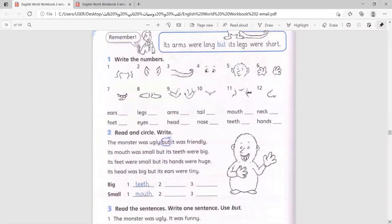Writing skills. Write the numbers. Here we have body parts of the monster and we will write them. Ears, legs, arms, tail, mouth, neck.